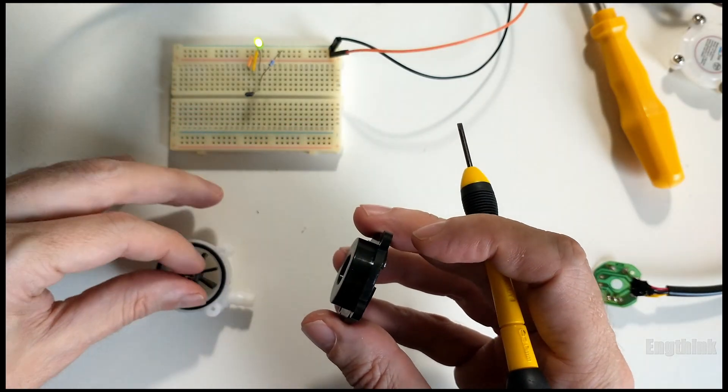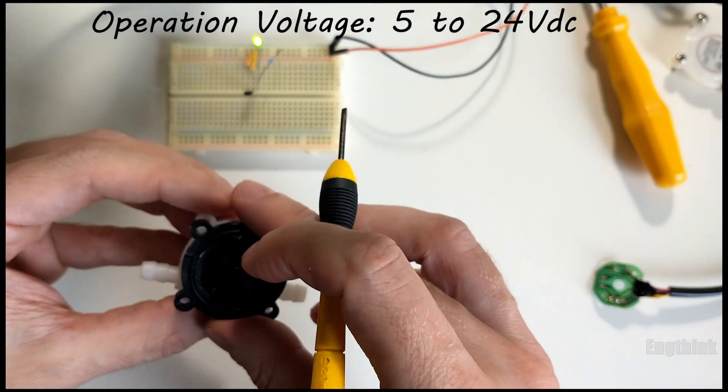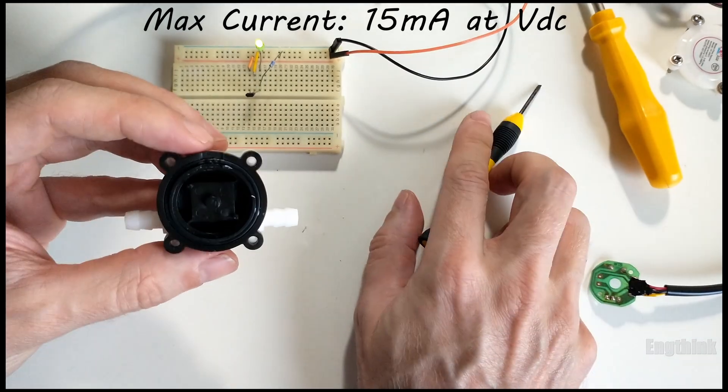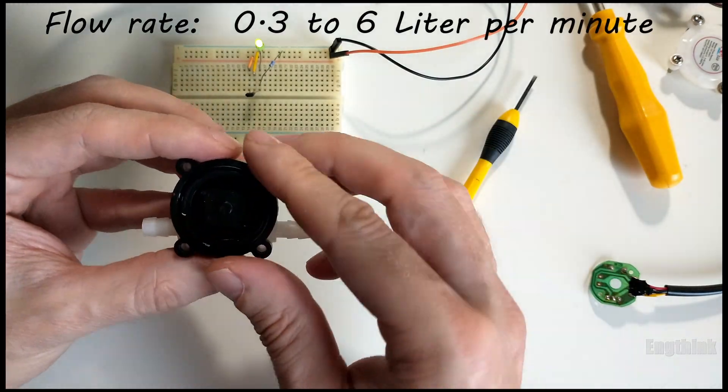Here are some key specifications. Operating voltage: 5 volts to 24 volts DC. Max current: 15 milliamps at 5 volts. Flow rate range: 0.3 to 6 liters per minute.